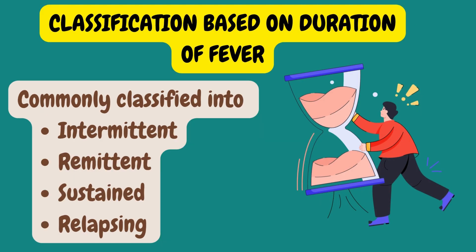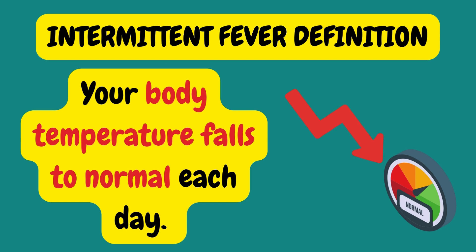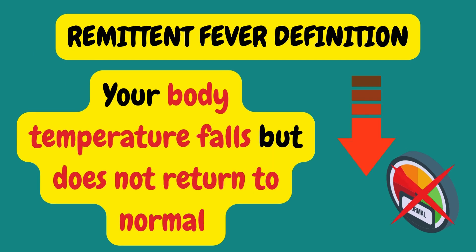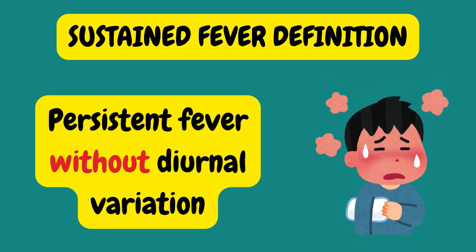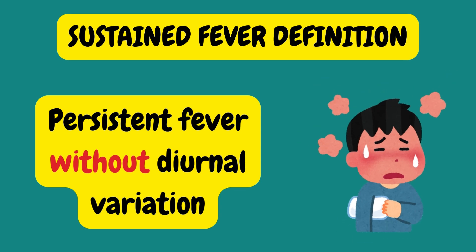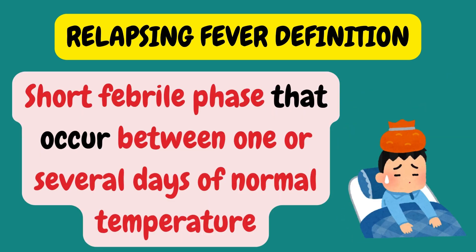The second classification is based on duration. It is commonly classified into intermittent, remittent, sustained, or relapsing. In intermittent fever, your body temperature falls to normal each day. In remittent, your temperature falls but does not return to normal. In sustained fever, you have persistent fever without any diurnal variation. In relapsing fever, you are febrile for short periods that occur between one or several days of normal body temperature.